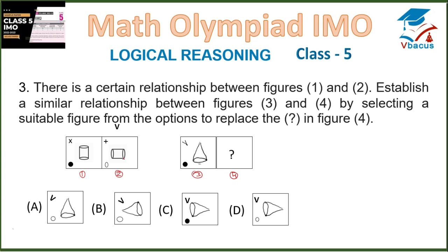In figure 2, the cylinder has been turned towards the right, and this cross is also turned to the right. The dot is hollow. Going to figure 3, I have turned this V towards the right — it has become V. Then the figure has been turned towards the right and the dot is filled. In figure 4, you can select a hollow dot. The same figure is in option D, so option D is correct.